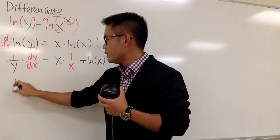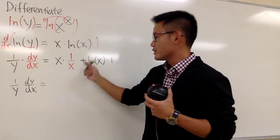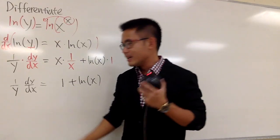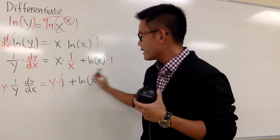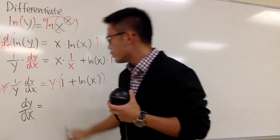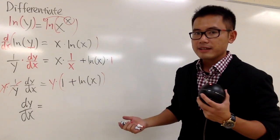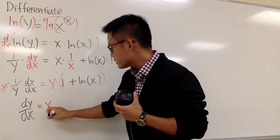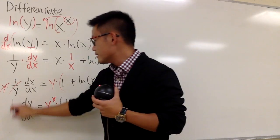So we have 1 over y times dy/dx on the left. On the right-hand side, x times 1 over x is just 1, and ln x times 1 is just ln x, so we have 1 plus ln x. We are done on the algebra — we have 1 over y, so the moment we multiply both sides by y, the y cancels, and we have dy/dx equal to y times this. And what's y in terms of x? Originally y is the same as x to the x power, so we write this as x to the x power times 1 plus ln x. That's it — that's one way to do it.